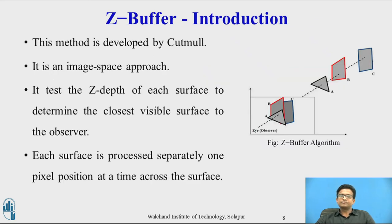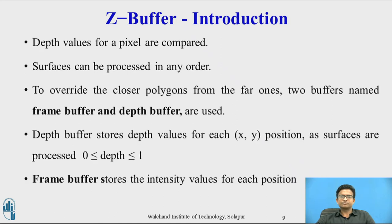The Z-buffer algorithm was developed by Catmull. It is an image space approach where we consider the surface of an image. In this method, the basic idea is to test the Z-depth of each surface to determine the closest visible surface to the observer. Each surface is processed separately, one pixel position at a time across the surface. This method also stores the intensity of an object that is to be displayed on the screen. The depth value of a pixel is compared, and the closest surface determines the color to be displayed in the frame buffer.